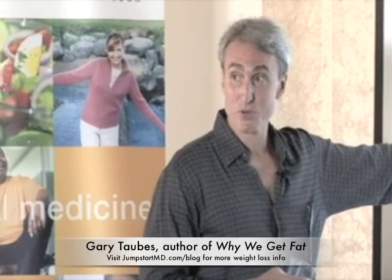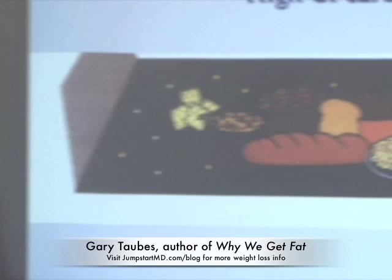Not all carbohydrates. The more insulin they stimulate, the more fattening they'll be. There's a whole group of carbohydrates that happen to be the base of the food guide pyramid — where we've all been told to eat for the past 40 years — bread, cereal, rice, and pasta. They're called high glycemic index carbs. They stimulate a lot of insulin secretion. They are particularly fattening.